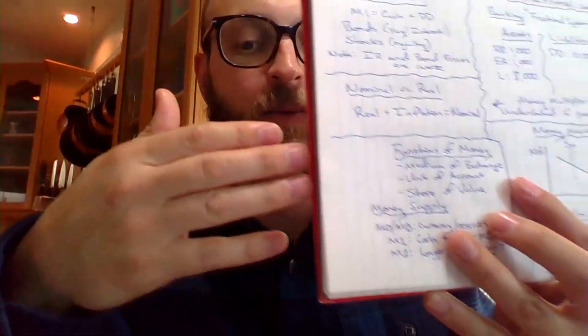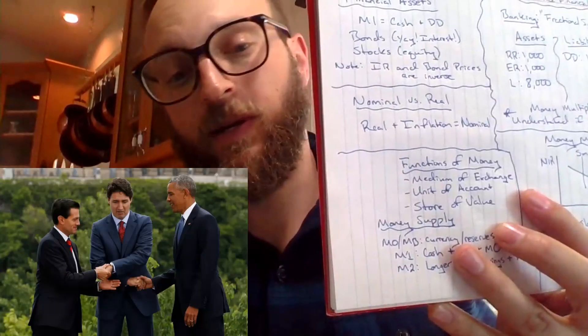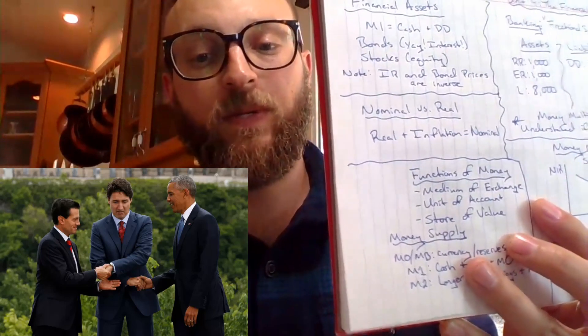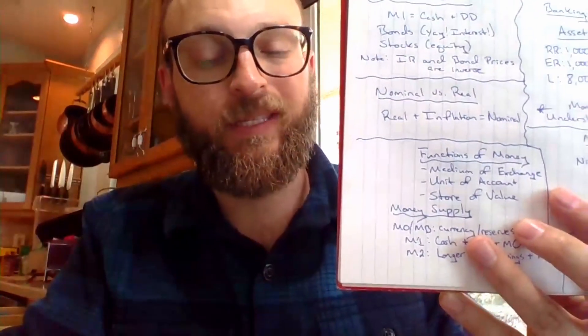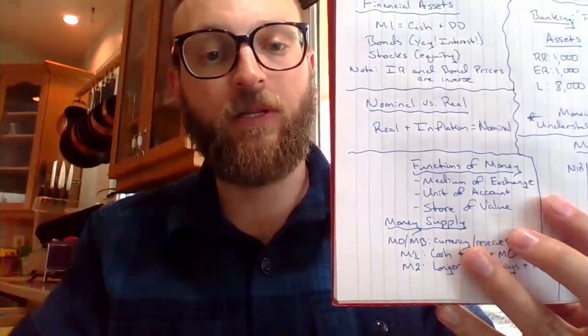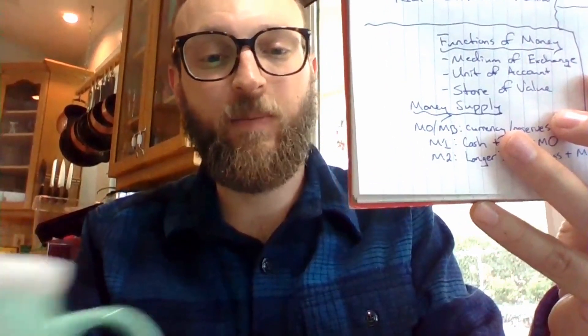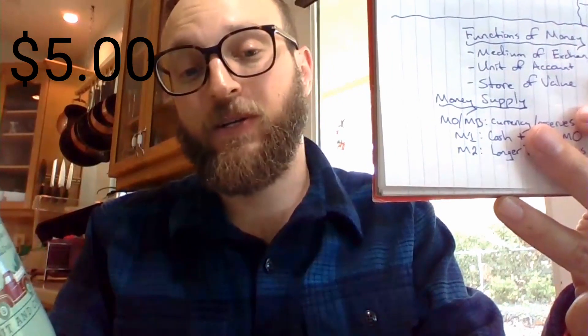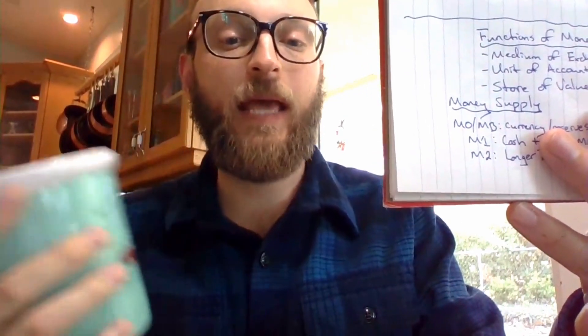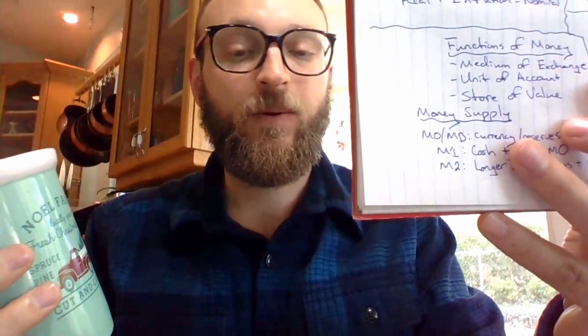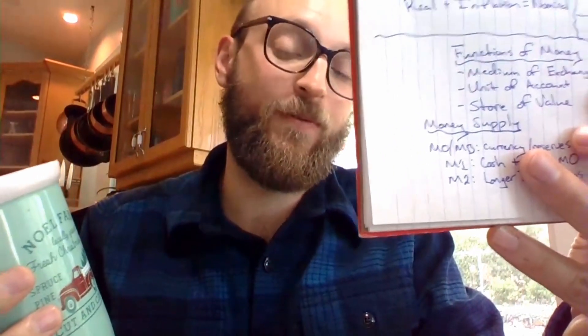The next section in unit four is the concept of the functions of money, which seem complicated and awkward, but they're really pretty straightforward. The first one is medium of exchange — money is used to trade things, it's the lubricant in the trade. Unit of account refers to our ability to assign a dollar value to something, like saying this cup is worth $5. That valuation allows us to account for its value, which segues nicely into the third function: store of value.